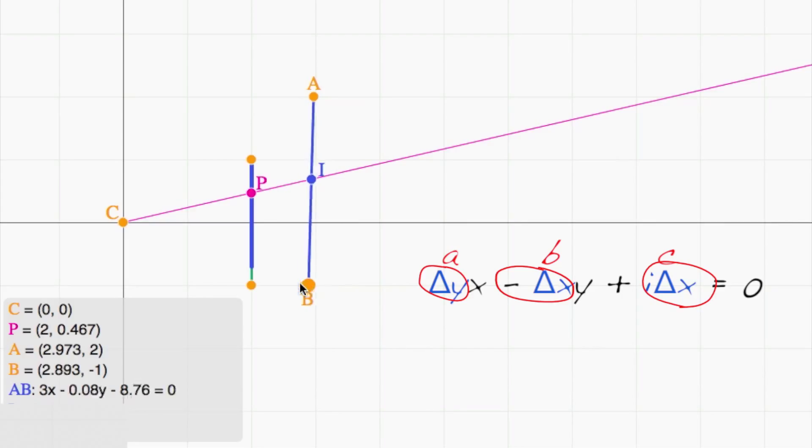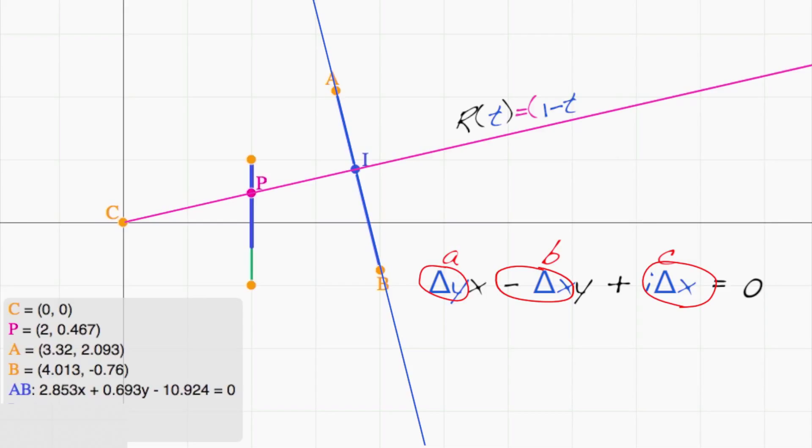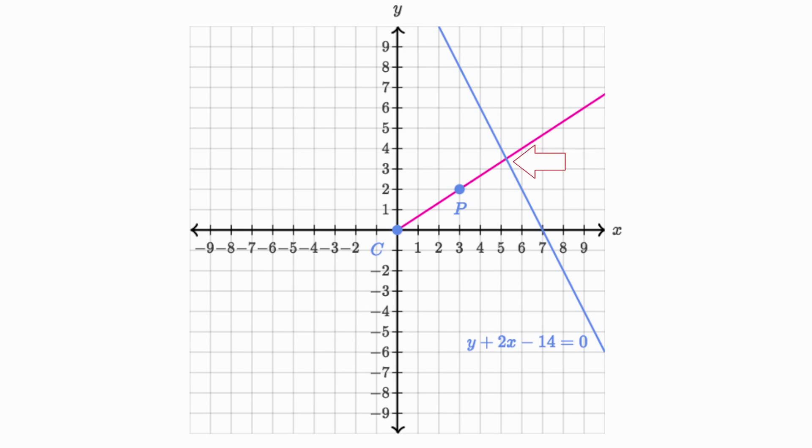Notice that as I move A and B around, the line equation updates accordingly. The line equation can be used with the parametric form of the ray to compute intersection points, this time for any type of line, even vertical ones. Use the next exercise to practice computing intersection points using line equations.